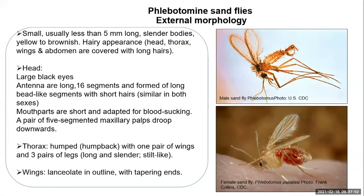The mouthparts are short — not like the mosquito's long piercing proboscis. The female phlebotomine sandfly's mouthparts are adapted to cut skin, creating a pool of blood which is then sucked — so they are pool feeders. The thorax is humped, giving a humpback appearance, with one pair of lanceolate wings that taper at the end, and long slender stilt-like legs.